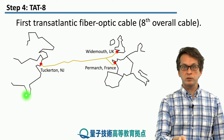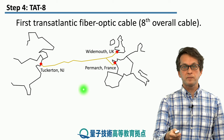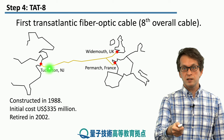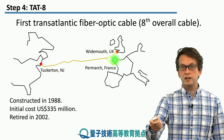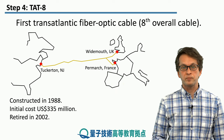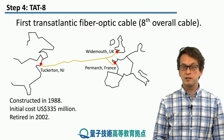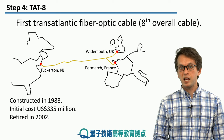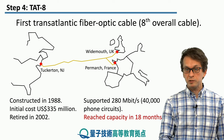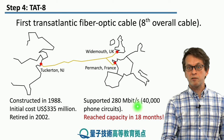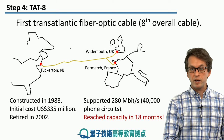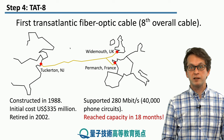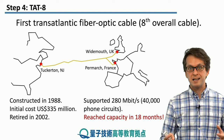A small note at the end: the first transatlantic fiber optic cable, called TAT-8, was laid in 1988 between Tuckerton, New Jersey, traveling across the Atlantic and splitting into the UK and France. It was constructed at a cost of approximately 335 million US dollars and was retired in 2002. Its bandwidth of 280 megabits per second — capable of carrying around 40,000 phone circuits simultaneously — was predicted to last a long time and perhaps never be reached, but that capacity was consumed in just 18 months. This demonstrates how quickly we consume and need to transfer data.